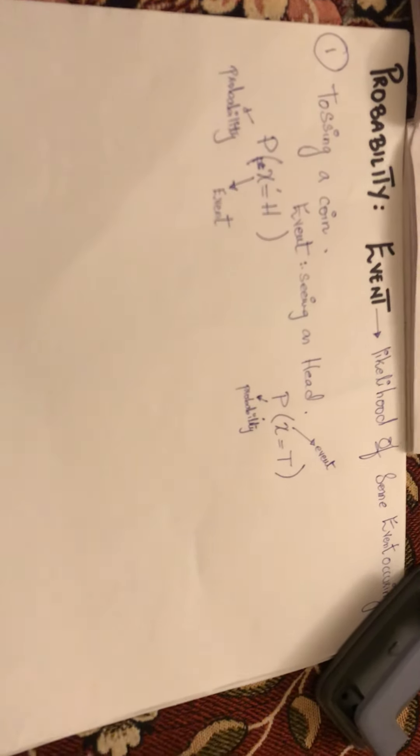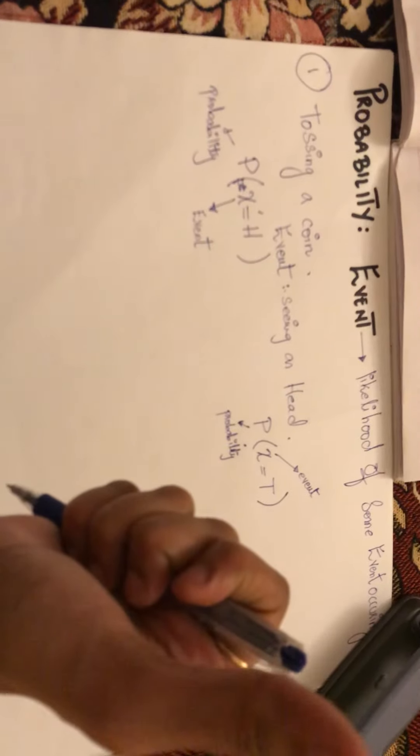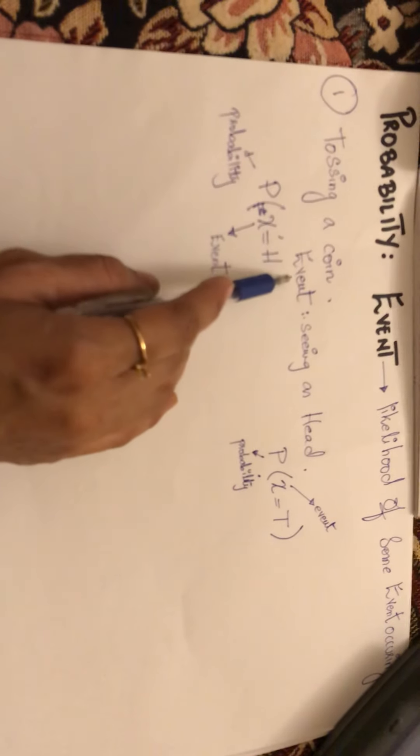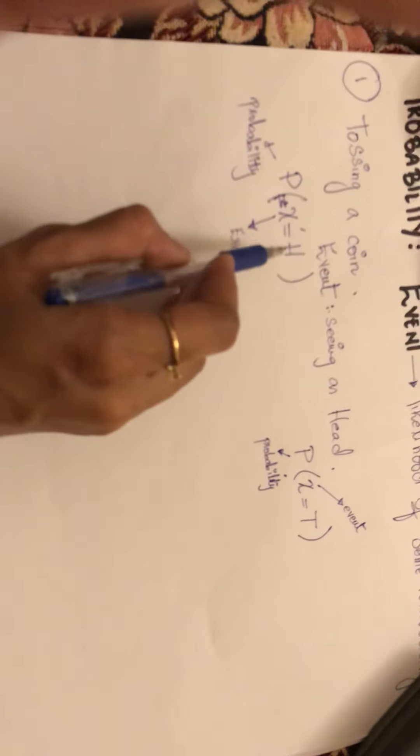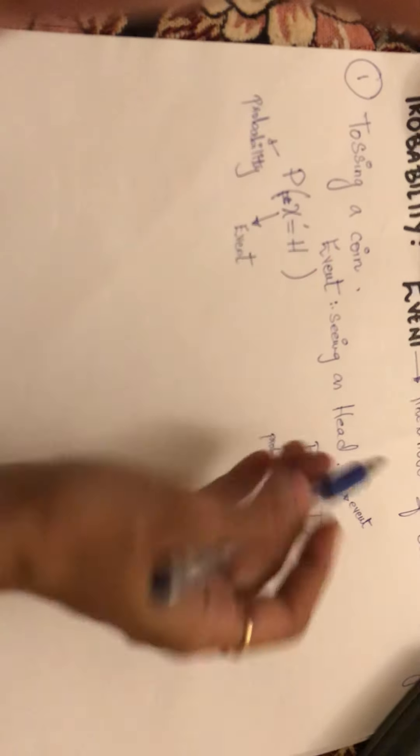In the first video I didn't explain what is an event. An event is the likelihood of some event occurring. For example, you flip a coin - the possible outcomes are that a head will occur or a tail will occur. Let's see what is an event. The event is you're seeing a head. How do we write that? P stands for probability, you open up a bracket, X just signifies that it is an event, equals H, and X signifies that it's a head. Then you close up the bracket.